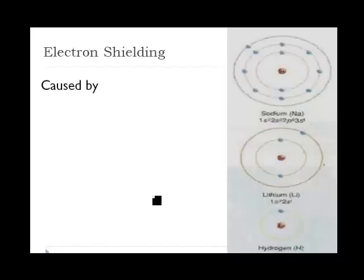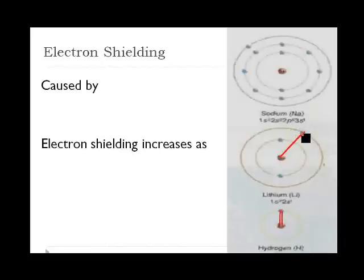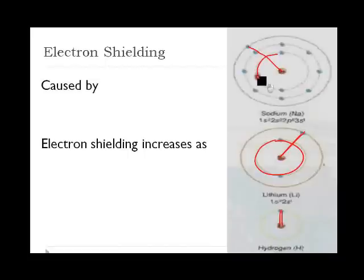This is often called electron shielding, caused by the inner electron shells shielding the valence electrons from the attraction of the nucleus, allowing the valence electrons to move further from the nucleus. Electron shielding increases as we go down a group. In hydrogen, the outermost electron is very close to the nucleus. In lithium, because it has a second energy level, that outermost electron is farther away and the inner shell shields the valence electron. In sodium, we have increased shielding from both the first and second energy levels, all working against that pull of attraction.